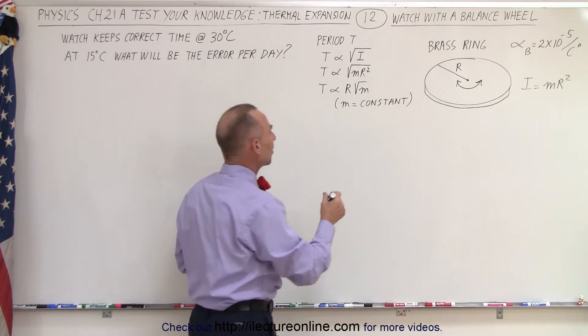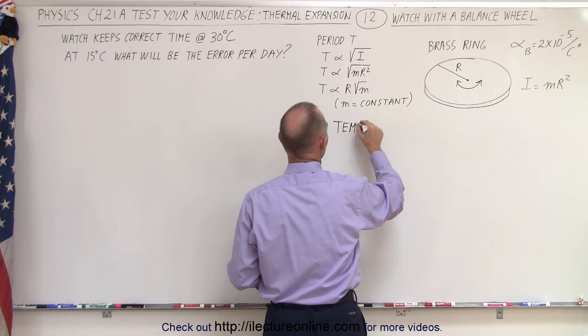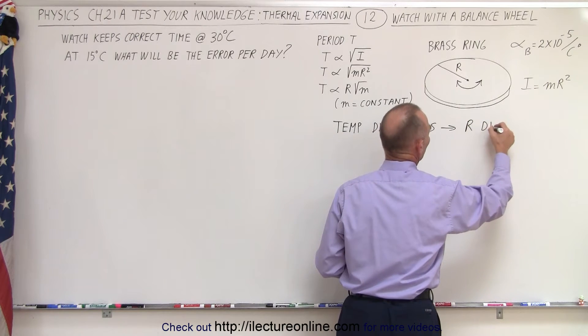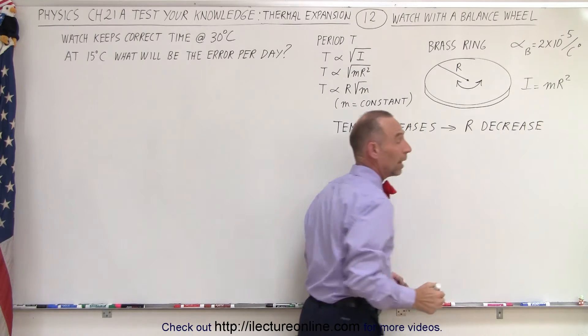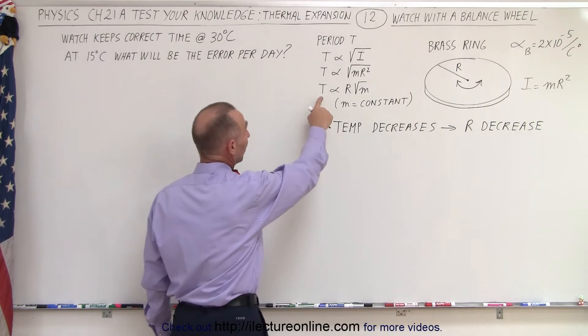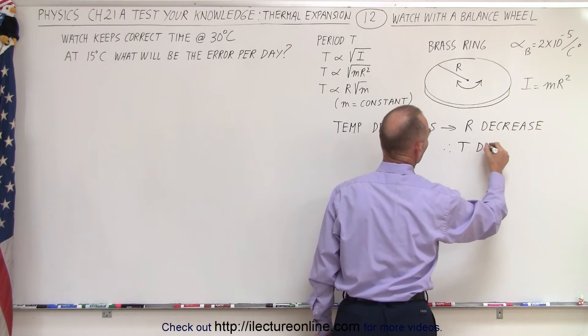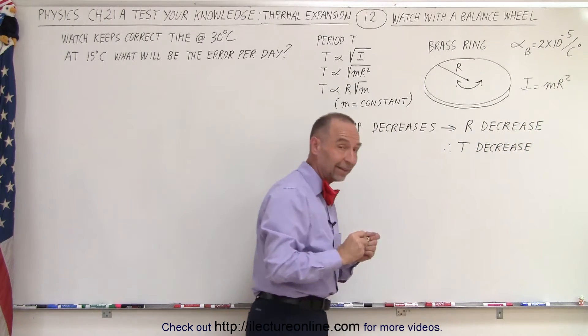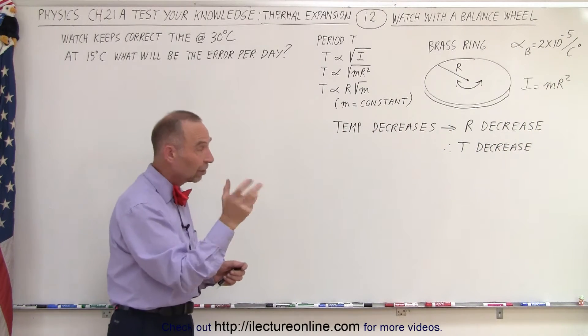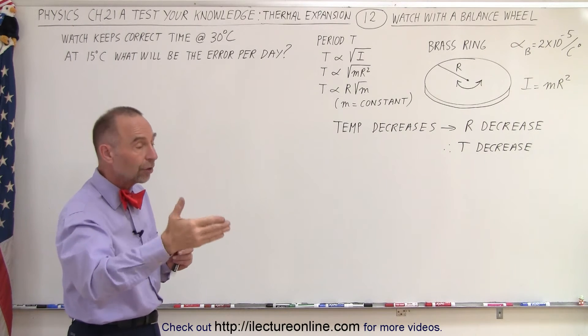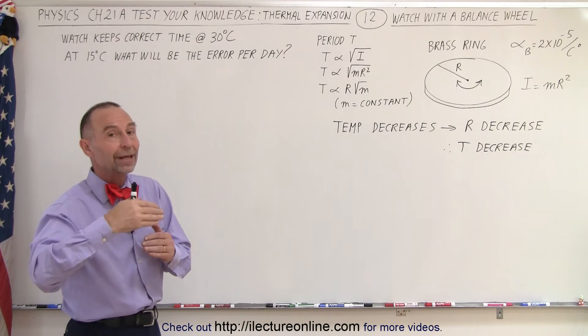Now notice that the temperature decreases. As a result, R will decrease. The radius of the disk will decrease. Now, as the radius of the disk decreases, then we realize therefore the period will decrease, which means that the oscillating disk will go faster and faster. Of course, when it goes faster, the clock runs faster, and the clock will run ahead.